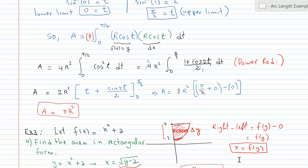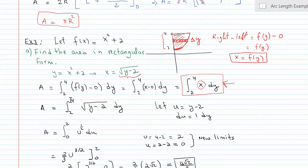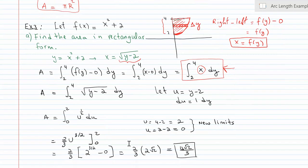Pause the video, try it out first, work it out, get the answer, then play the video and compare. Since I'm integrating with respect to dy, I have to think of it as right minus left. The right is the function f(y), the left is the y-axis which is zero, so the height of the rectangle is f(y). I solve for x, substitute my limits from 2 to 4, and integrate to get the answer of 4√2 over 3.